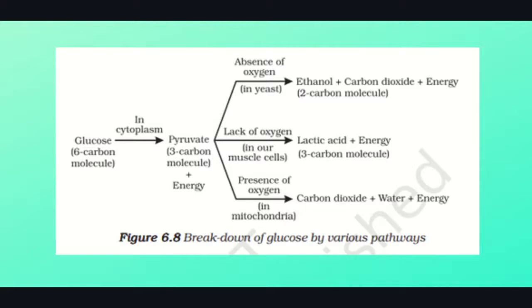In anaerobic respiration in yeast, in the absence of oxygen, pyruvate breaks down into ethanol — a two-carbon molecule — and carbon dioxide, and a small amount of energy is also released. When there is a lack of oxygen in our muscle cells, lactic acid and a small amount of energy are released. In aerobic respiration, however, this process occurs in the mitochondria, and the products formed are carbon dioxide and H₂O, with a large amount of energy released compared to anaerobic respiration.